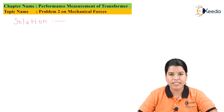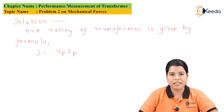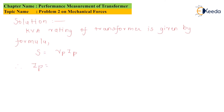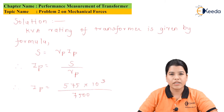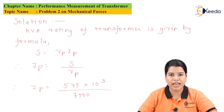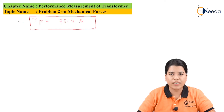The KVA rating of the transformer is given by S = Vp × Ip. Rearranging to find Ip, we get Ip = S / Vp. Substituting the values: Ip = 575 × 10³ / 7500. Therefore the RMS value of the current Ip = 76.8 Amperes.